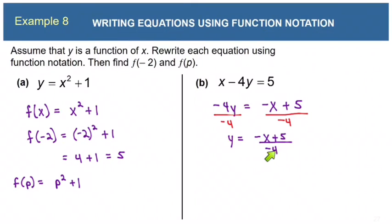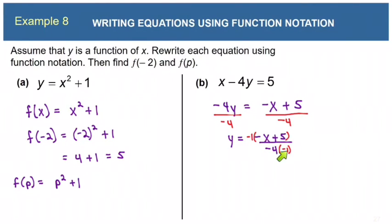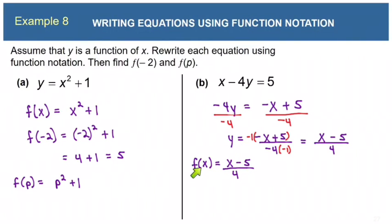It's important to multiply the entire numerator and entire denominator by negative 1 because x is a term — we cannot simplify with terms. Distributing negative 1 in the top gives x minus 5, and negative 4 times negative 1 gives 4 in the bottom. That's much cleaner. Now it's solved for y, and we replace y with f of x. This is our function written in function notation.